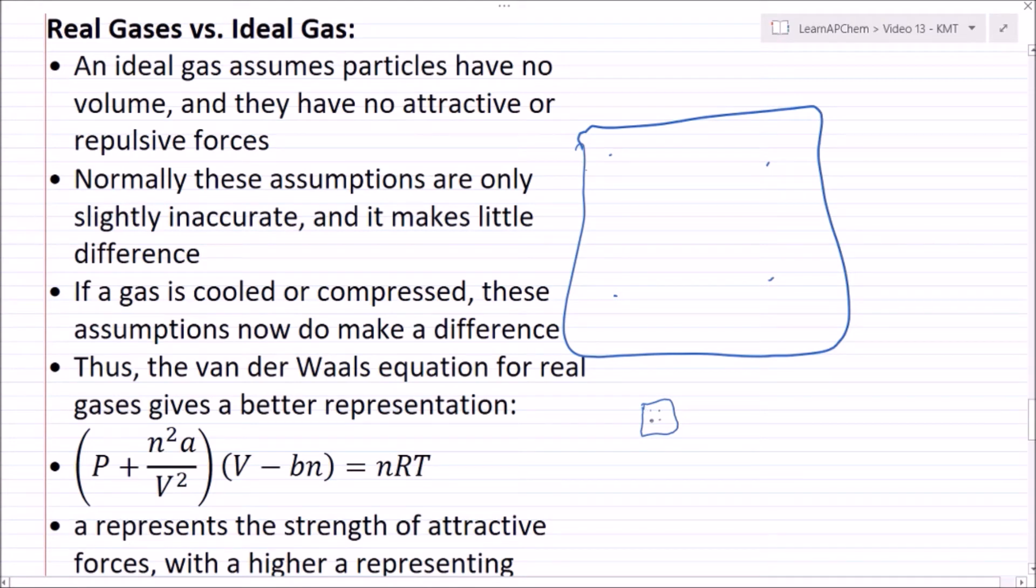But if I shrink this down to a really small volume, now these particles are probably actually going to hit each other, so now we have to account for the actual size of the atoms. Similarly if we're cooling down everything, they're going to move slower and our attractive forces are going to go up.